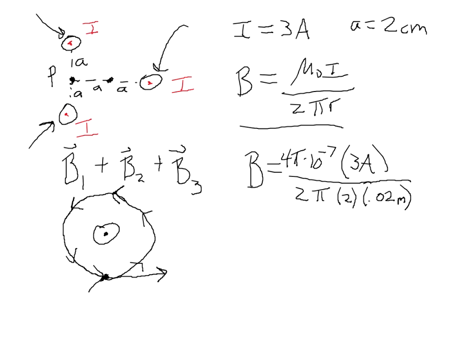Now let's figure out the magnetic field due to the second wire. Point your thumb of your right hand out of the screen toward you, and your fingers will curl in the direction of the magnetic field, making a circle going counter-clockwise. But this time, counter-clockwise means to the left — so the magnetic field due to wire 2 at point P points to the left.